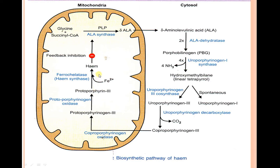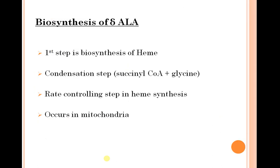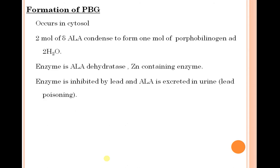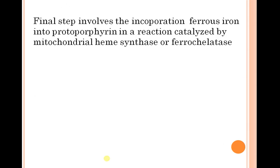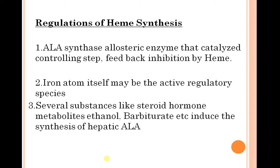The pathway continues through protoporphyrinogen and finally to heme. The overall mechanism involves glycine plus succinyl-CoA, with initial steps occurring in the mitochondria and intermediate steps in the cytosol. The first rate-controlling step is the condensation of succinyl-CoA with glycine occurring in the mitochondria. Formation of porphobilinogen occurs in the cytosol, and the conversion of protoporphyrinogen to protoporphyrin and heme follows. Regulation involves delta-aminolevulinic acid synthase, with feedback inhibition by heme.